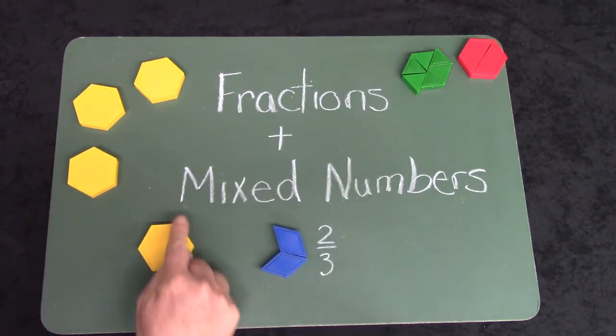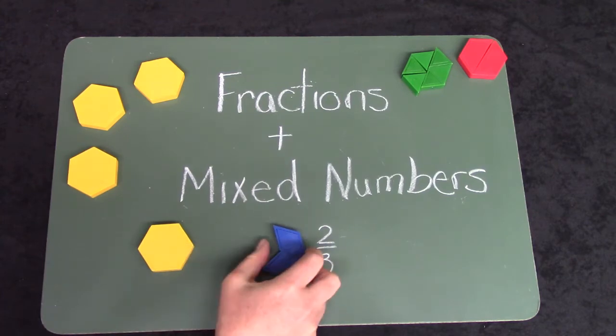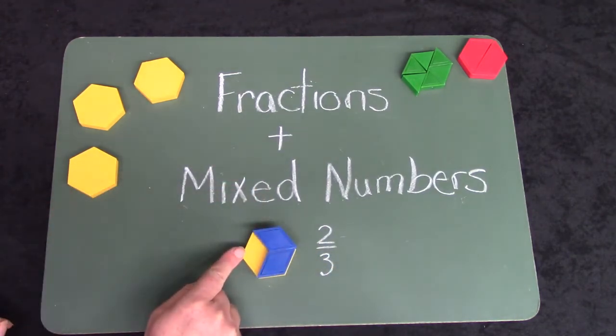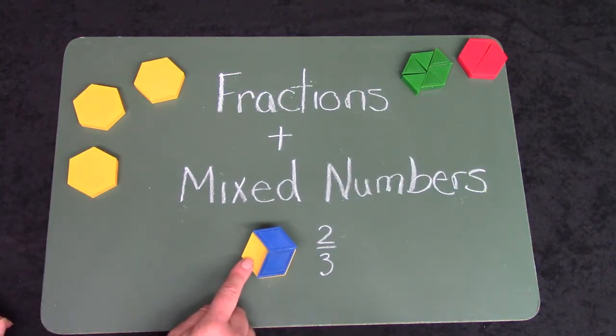A fraction is when you have less than one. And if we had two out of the three pieces that we would need, we would have less than one. We wouldn't have enough to cover the one hexagon.